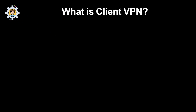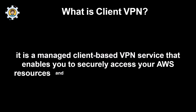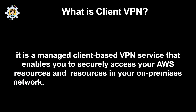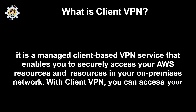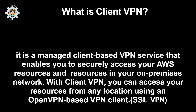What is Client VPN? It is a managed client-based VPN service that enables you to securely access your AWS resources and resources in your on-premises network. With Client VPN, you can access your resources from any location using an OpenVPN-based VPN client. It is an SSL VPN.